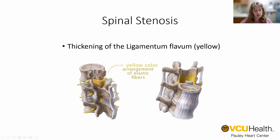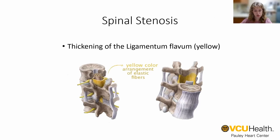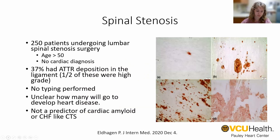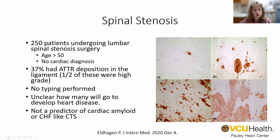Just like carpal tunnel disease, spinal stenosis is common in patients with TTR amyloidosis. Spinal stenosis occurs when the ligaments around the spinal cord thicken. We think that amyloid deposition in this tissue is the culprit of the thickening in patients with TTR amyloidosis. One study looked at 250 patients ages 50 and up without cardiac disease who were undergoing surgery for lumbar spinal stenosis, and found that nearly 40% of these patients had TTR amyloid deposition in the ligament.